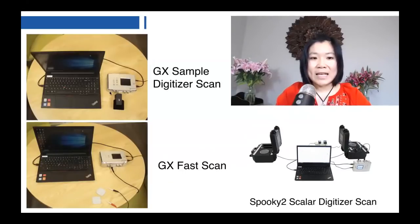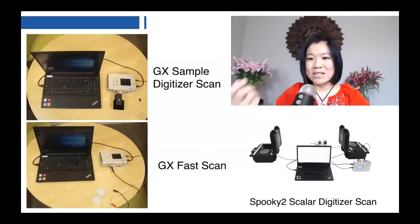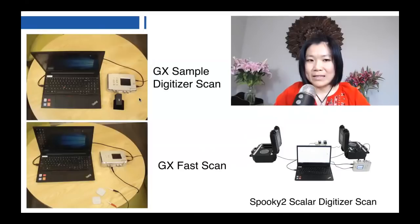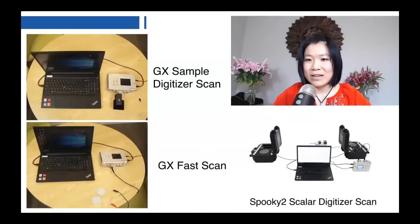Generator X can also be connected with the sample digitizer to do a sample digitizer scan. That's when you analyze what pathogens are in your mucus, in your blood, in your urine. It is very accurate. It takes a little bit long, but because you don't have to be wired to the Generator X, it's not a pain at all.